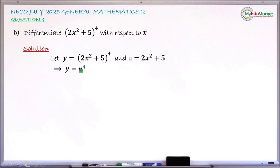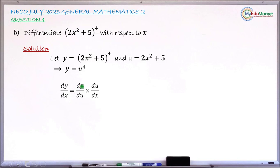The correct technique to apply here is the composite or chain rule. The chain rule states that the derivative of y with respect to x equals the derivative of y with respect to u, multiplied by the derivative of u with respect to x.